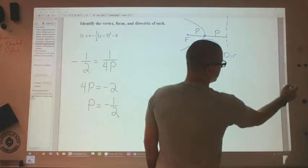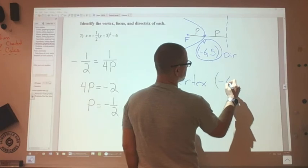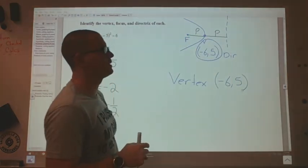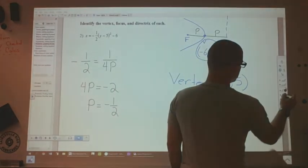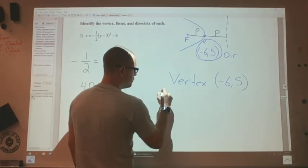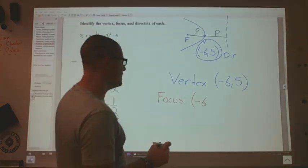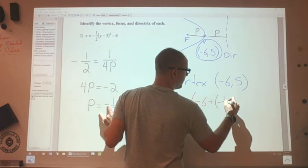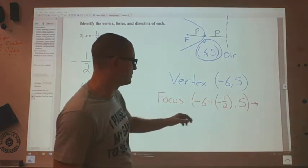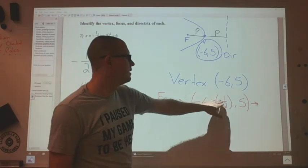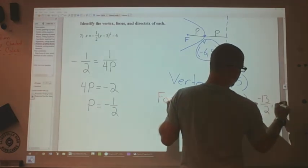So breaking this down, we already identified the vertex is at negative 6, 5. And because the parabola is oriented horizontally, I know I need to add p to the horizontal coordinate of the vertex. So my focus will be at negative 6 plus p. So plus negative 1/2 and then the 5. And then I just do that. So negative 6, I know it's going to be negative 12 halves plus negative 1/2. That's negative 13 halves and 5.